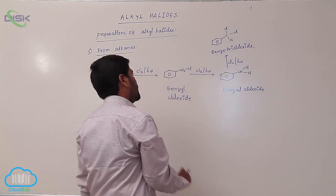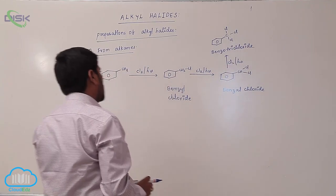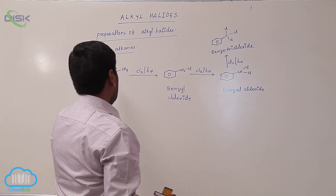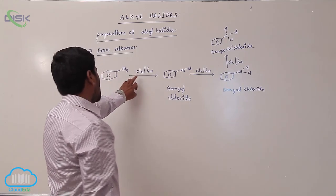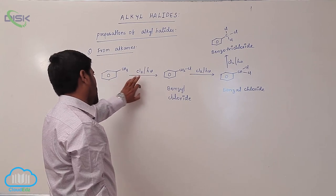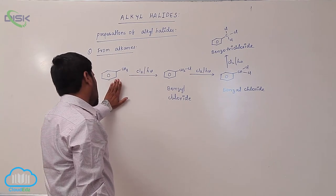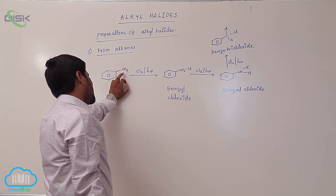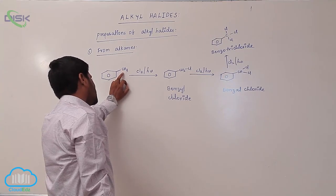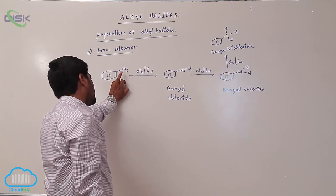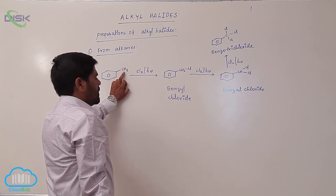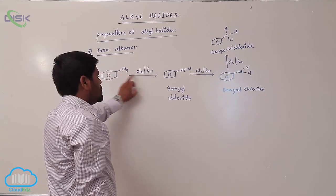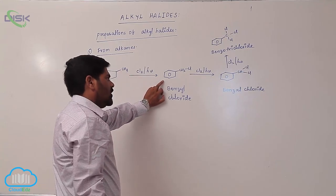So like this, if we are taking one mole of chlorine in the presence of sunlight, the benzylic hydrogen is replaced or substituted. Which hydrogen? The benzylic hydrogen is replaced to form benzyl chloride.